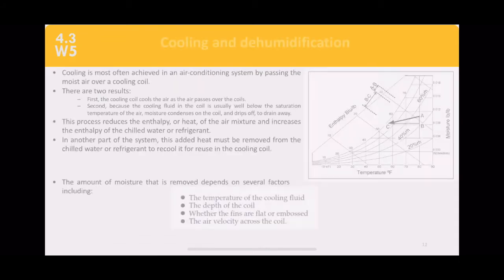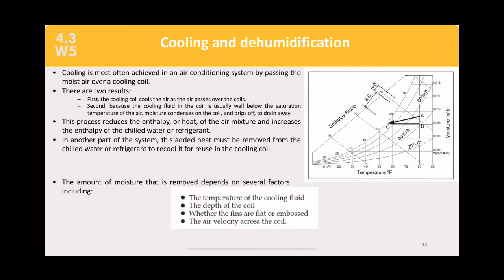Next is cooling and dehumidification. Cooling in an air conditioning system is achieved by passing moist air over a cooling coil, which absorbs heat and cools the air. Because the cooling fluid is well below the saturation temperature of the air, moisture condenses on the coil and drains away — removing heat by both absorbing heat into the coil and condensing water vapor into liquid.